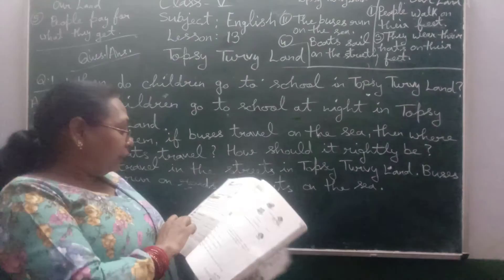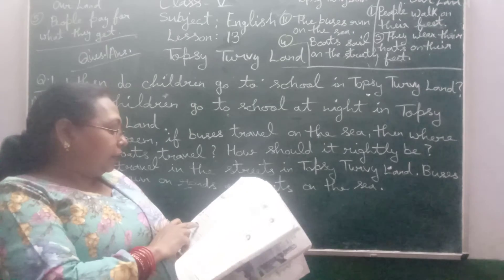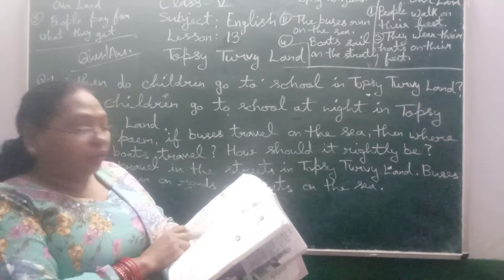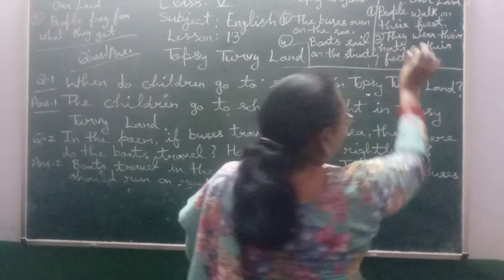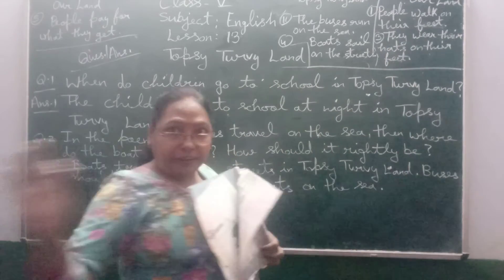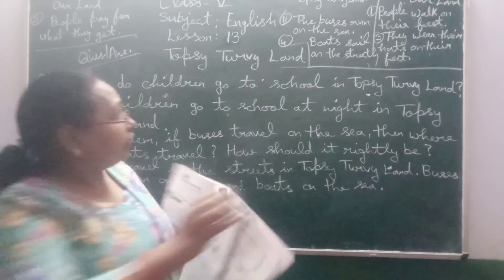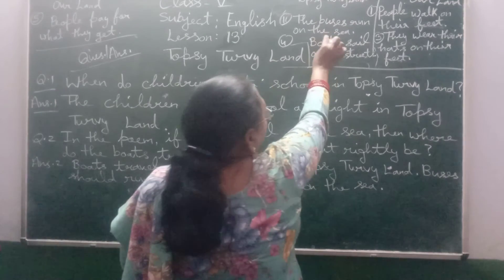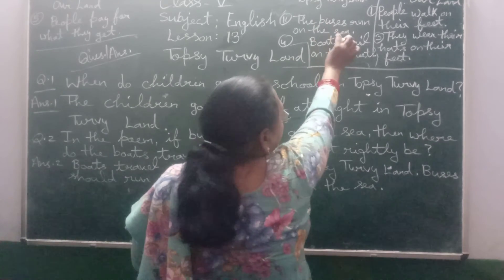The second sentence: in Topsy Turvy Land, the buses run on the sea. But in our land, buses run on the streets or roads.